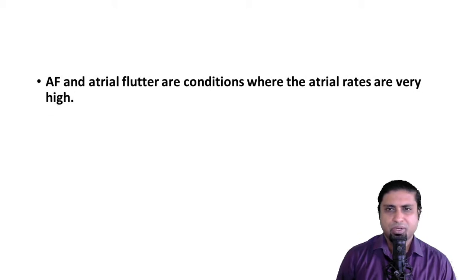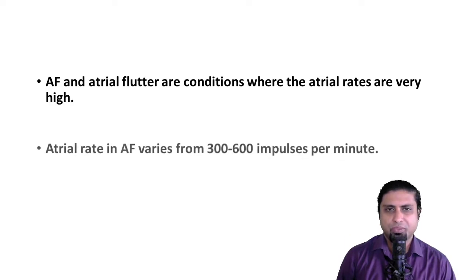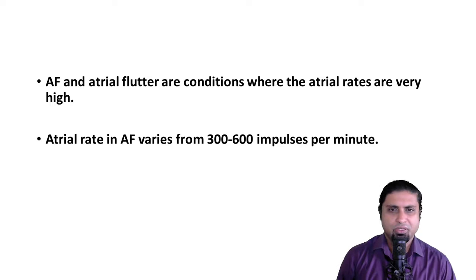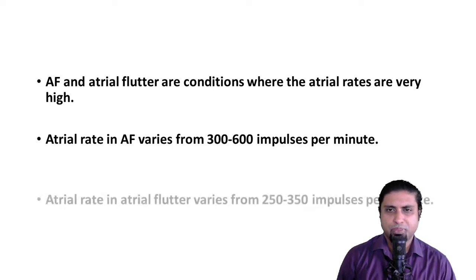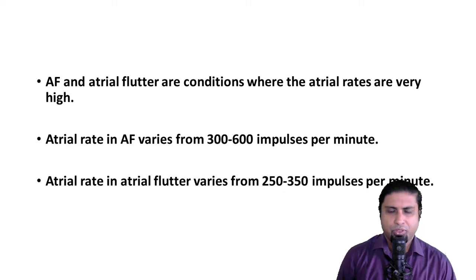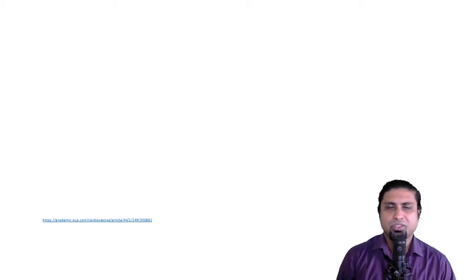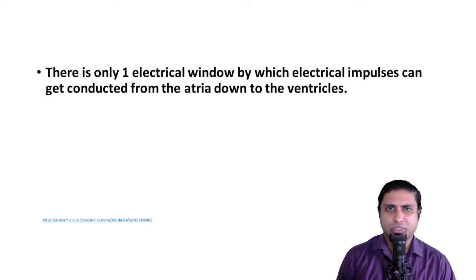Atrial fibrillation and atrial flutter are conditions where the atrial rates are very high — pathologically high. For example, in atrial fibrillation the atrial rates can vary from 300 to 600 impulses per minute, while in atrial flutter the atrial rates may vary from 250 to 350 impulses per minute. There is only one electrical window by which impulses are conducted from the atria down to the ventricles, and this is the atrioventricular node.